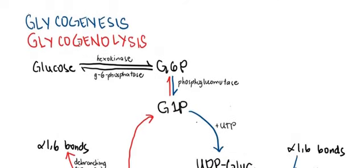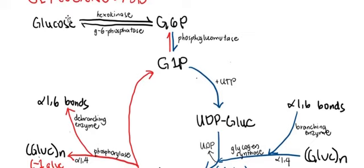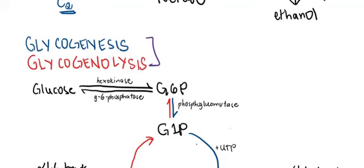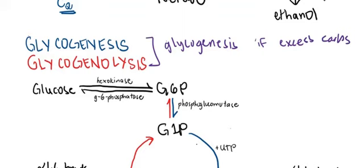Now we go to glycogen metabolism. Glycogenesis means the creation of glycogen; glycogenolysis is the breakdown of glycogen. From glycolysis, the first reaction converts glucose to glucose-6-phosphate (G6P). Although G6P can become pyruvate, it can also be used for glycogen synthesis. Your body will only create glycogen — glycogenesis will only occur — if there is excess carbohydrates. For example, if you ate a lot of rice and your body only needs some for energy, the excess is stored as glycogen.